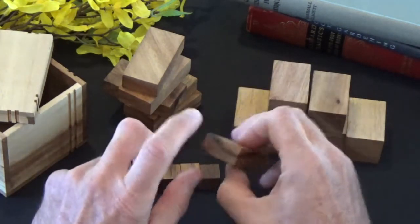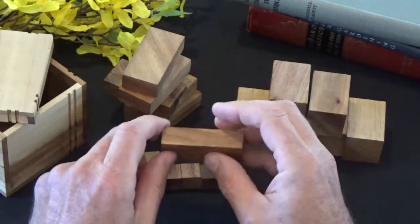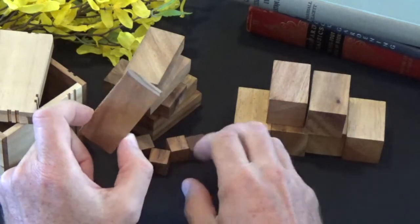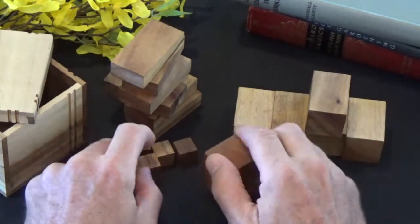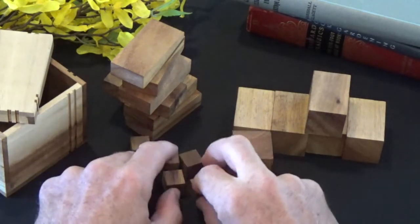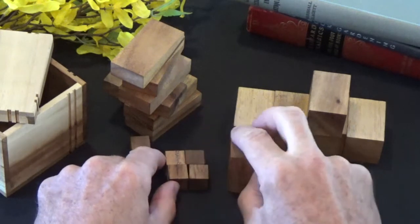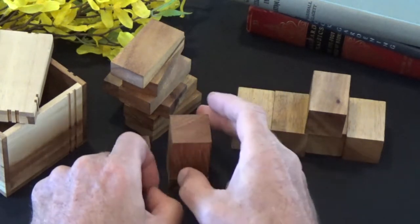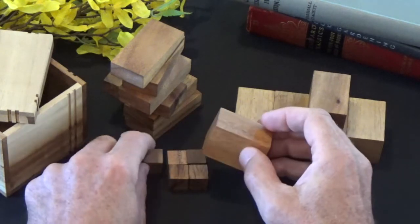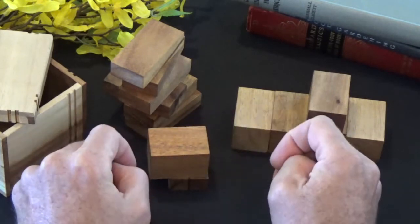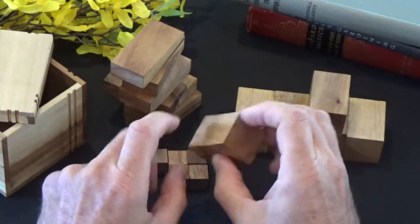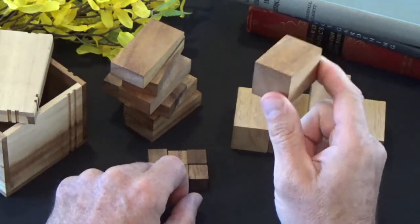So regardless of how we place this piece, it's always going to cover an even number of cubes. With this piece, same thing. If we place it in this direction, it's going to cover six cubes. Imagine a sixth cube there. Okay? So again, regardless of how we place this, it's always going to cover an even number of cubes.